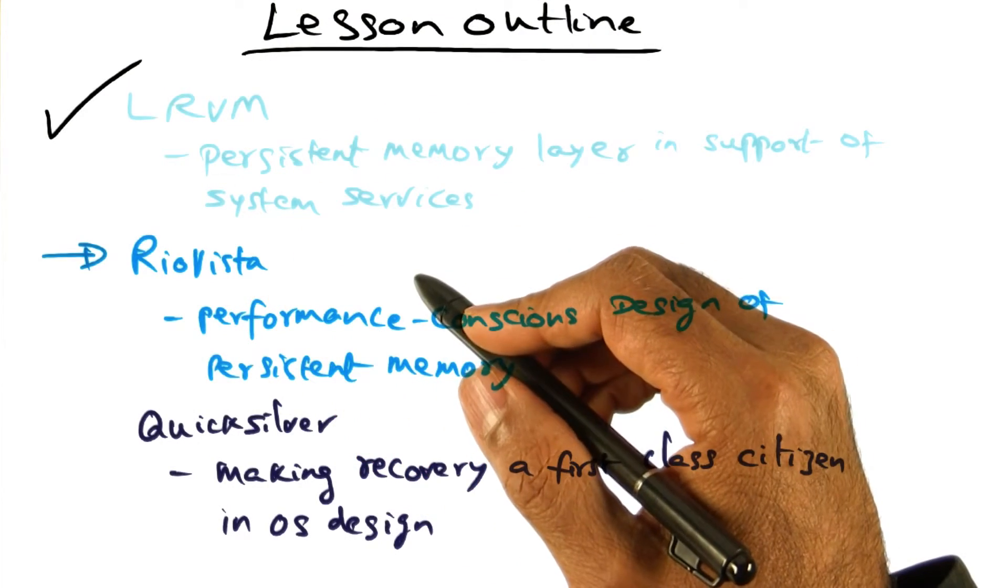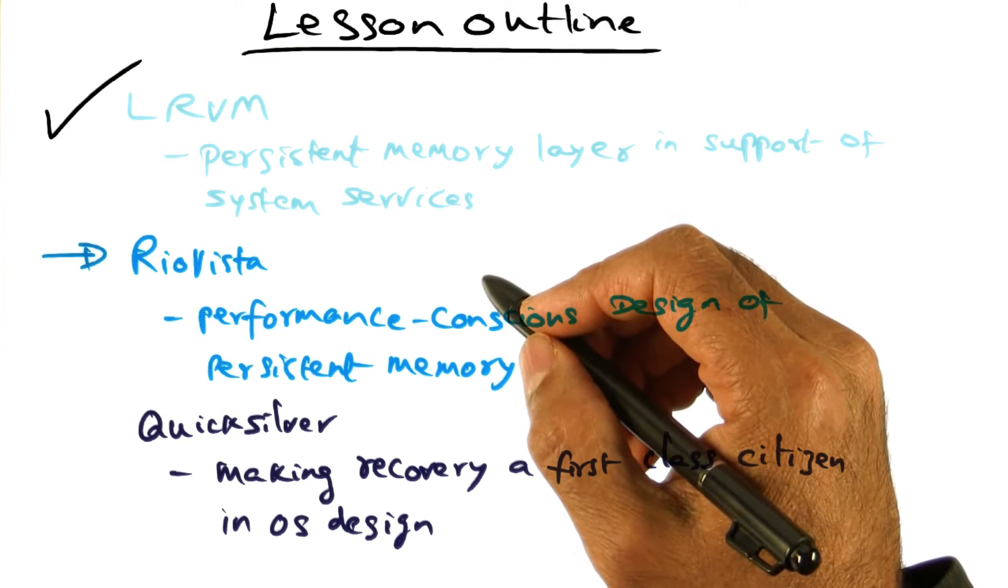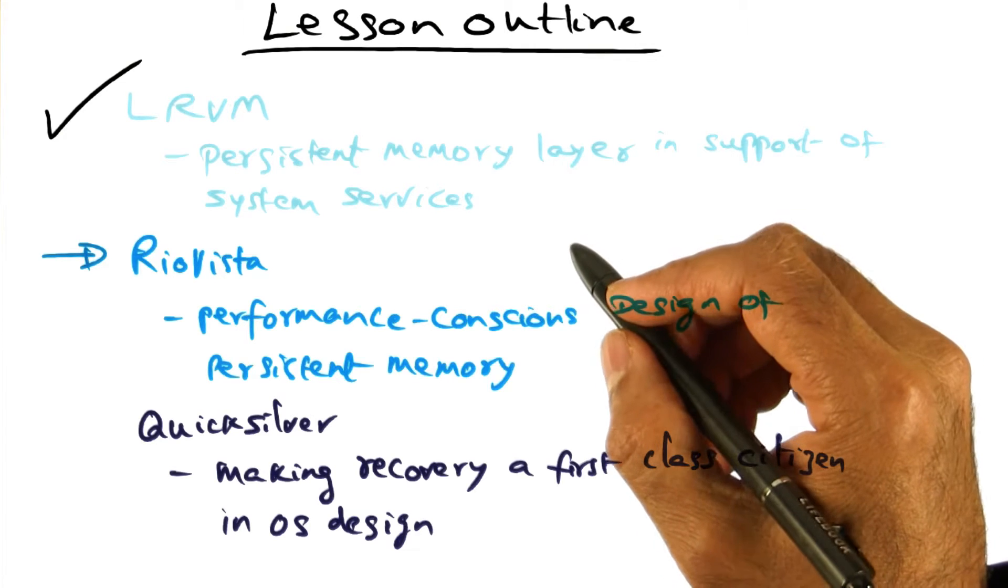So how does LRVM do it? Well, it does it by providing transactional semantics for persistent data structures. It calls itself lightweight since it eliminates all the usual heavyweight properties associated with transactions.